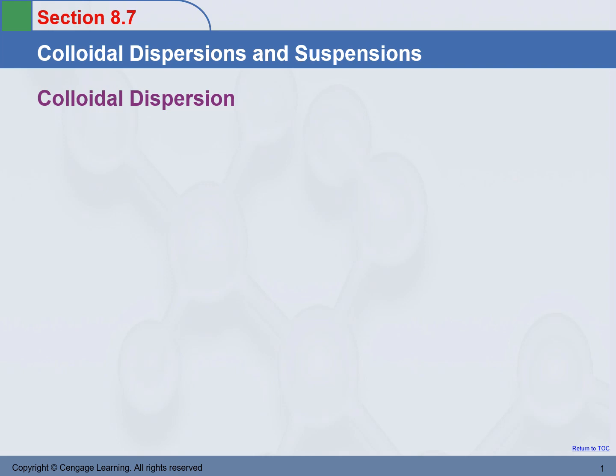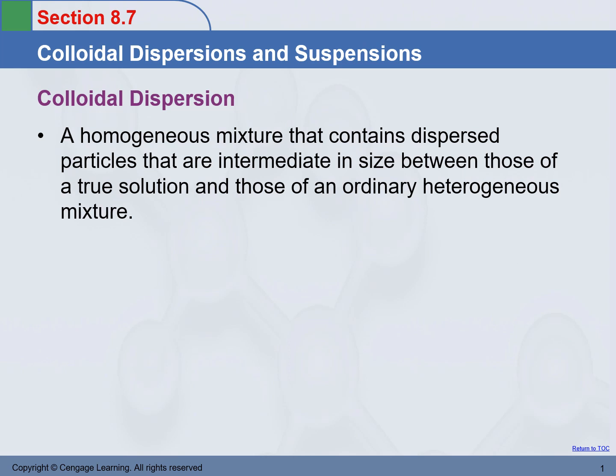The first one is colloidal dispersion. It is a homogeneous mixture that contains dispersed particles that are intermediate in size between those of a true solution and those of an ordinary heterogeneous mixture. A solution is a homogeneous mixture, but colloidal dispersion is different in that the particle size is bigger than the particles in a true solution, yet not big enough to make the whole system heterogeneous. The whole thing is still homogeneous — you still see one uniform phase.